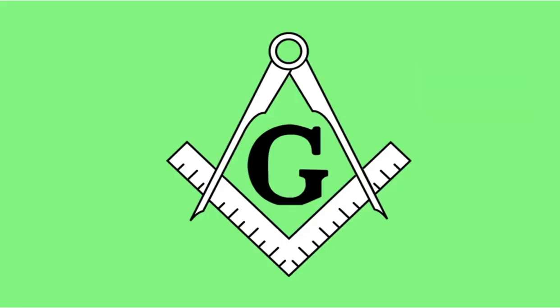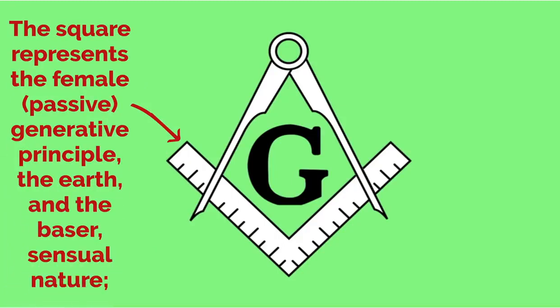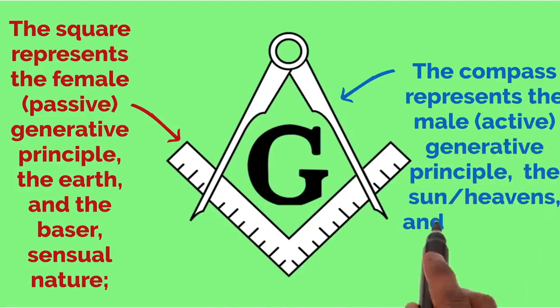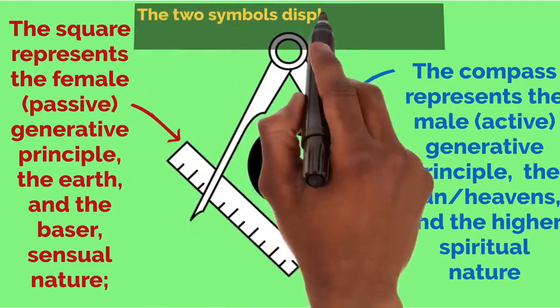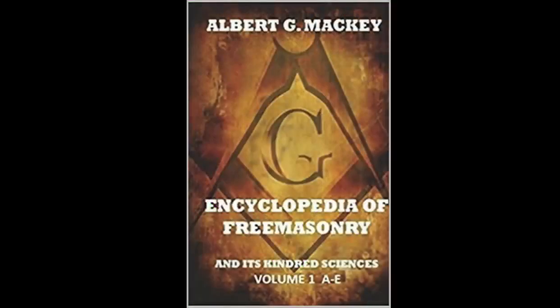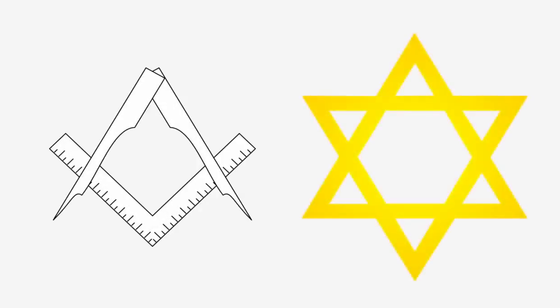The square and compass together incorporate yin yang symbolism. The square represents the female passive generative principle — the earth and the baser carnal nature — and the compass represents the male active generative principle — the sun and the higher spiritual nature. The two symbols together represent sexual union. In Albert Mackey's Masonic Dictionary, he says the square and compasses refer to the Freemason's duty to the craft and to himself, adopted as the badge or token of the fraternity.